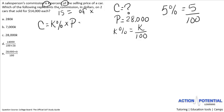Now we can plug in our pieces. C we'll leave alone, that's what we're solving for. K percent is the same thing as K over 100, and P is the same thing as 28,000.